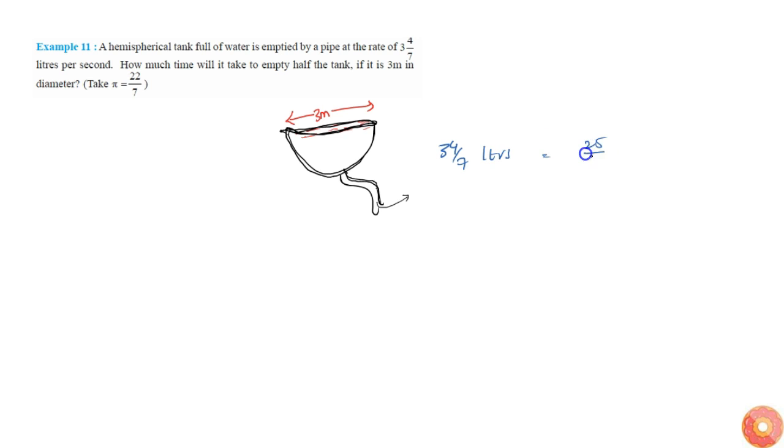34/7 will be simply 25/7 liters per second. So first, to find the half of volume, we need to find half of volume of tank, which will be equal to half into volume of tank.